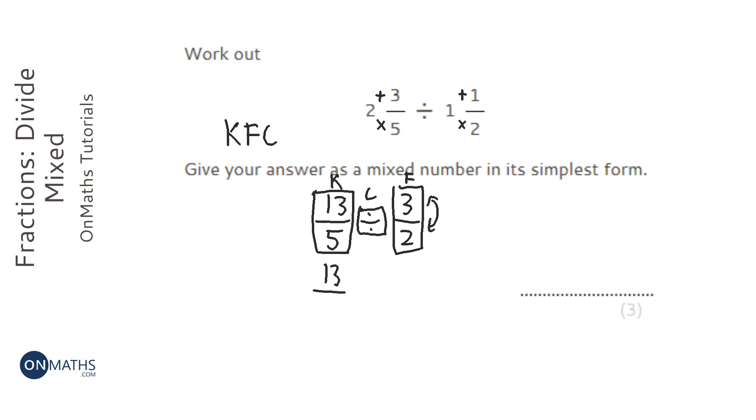So we're keeping the first fraction the same, we're going to change the middle to a times, and we're going to flip the second fraction. And then all we need to do is times it out. So that would be 26 over 15.